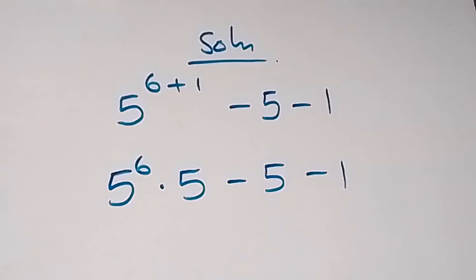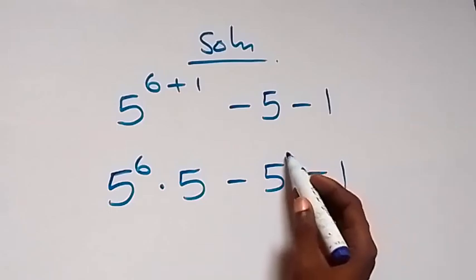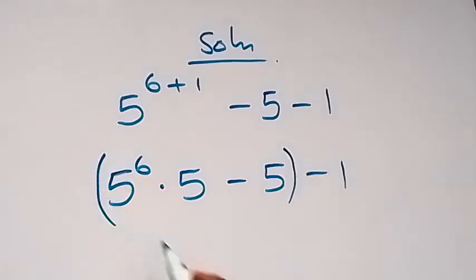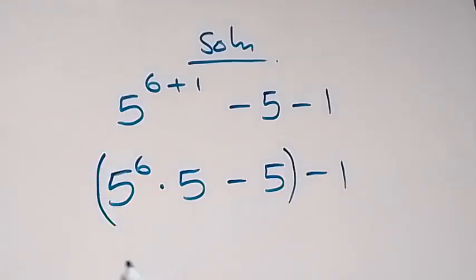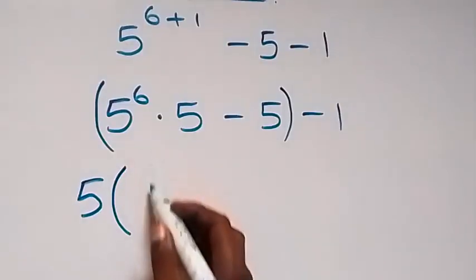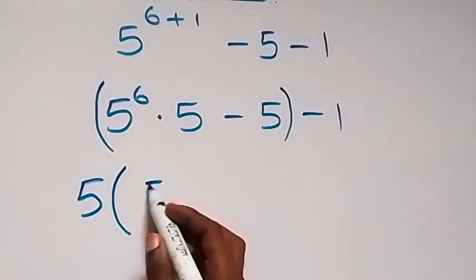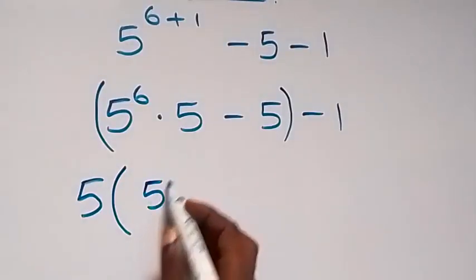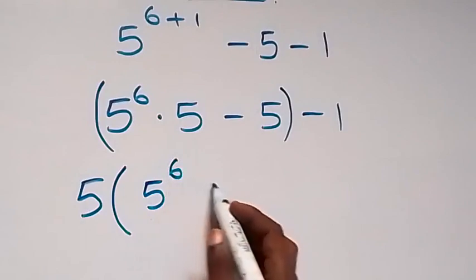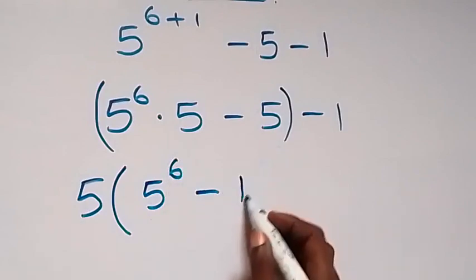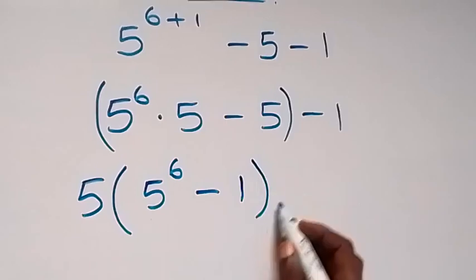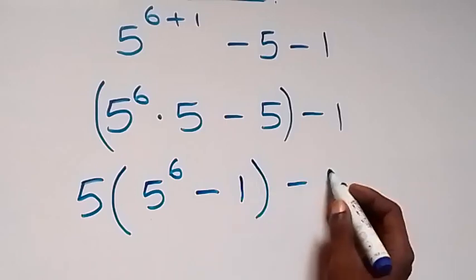Then here, let's group this together. Then we factor 5 out. So here we have 5 into bracket. Here we have 5 raised to power 6 left, then minus. Here we have 1 left, then minus 1.